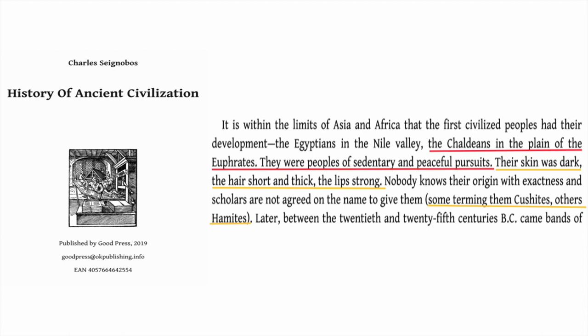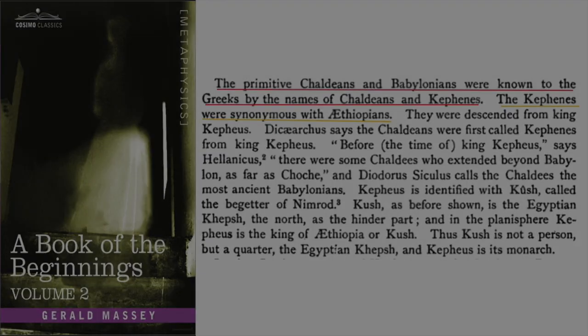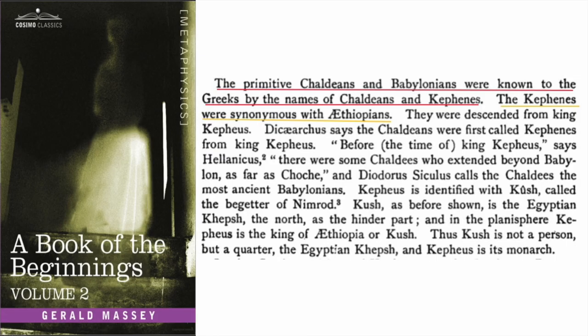According to Smith's Bible Dictionary, the Chaldeans were in the earliest times merely one of many Kushite tribes inhabiting the great alluvial plain known as Chaldea or Babylonia. According to History of Ancient Civilizations, the Chaldeans in the plain of the Euphrates had dark skin, short and thick hair, and strong lips — some termed them Kushites, others Hamites. According to A Book of the Beginnings, the primitive Chaldeans and Babylonians were known by the names Chaldeans and Calfeens, and the Calfeens were synonymous with Ethiopians.